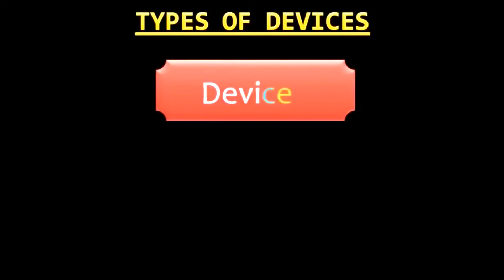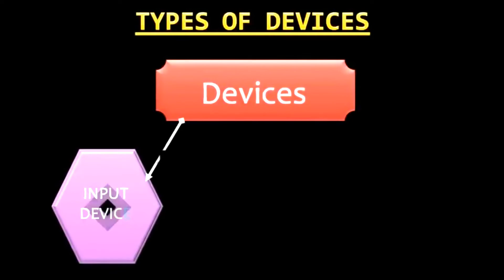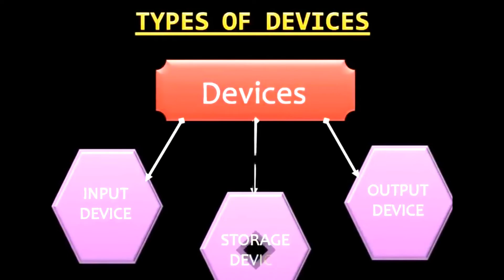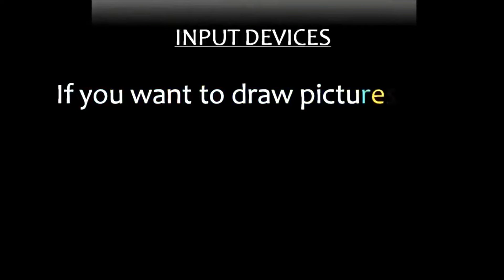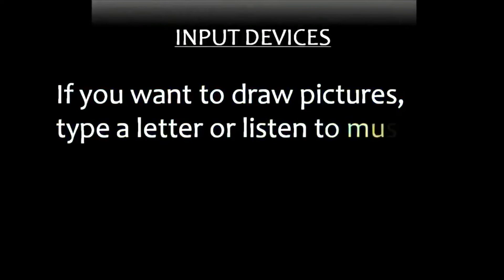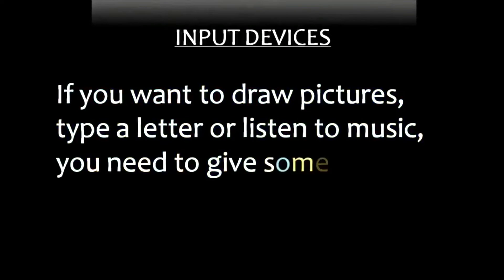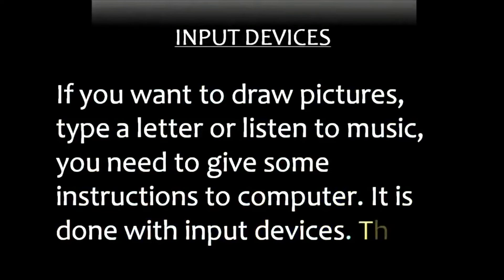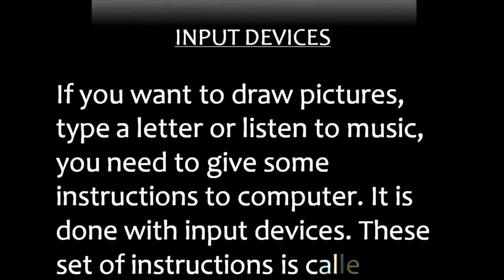Input devices, output devices, and storage devices. Input devices: if you want to draw pictures, type a letter, or listen to music, you need to give some instructions to the computer. This is done with input devices. This set of instructions is called input.